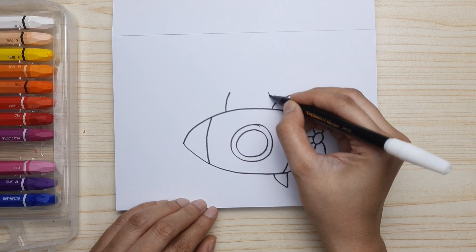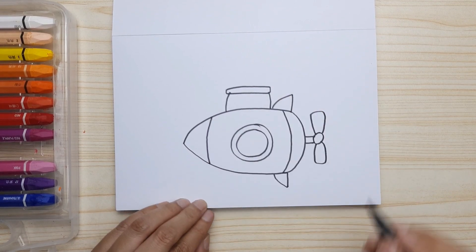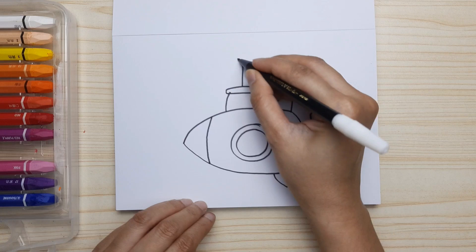Start drawing the conning tower, and then we end up with the periscope at the top.